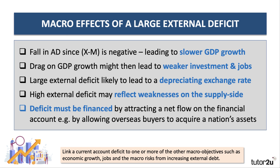The external deficit itself may actually reflect weaknesses on the supply side. The crucial point is that a high external deficit has to be financed by attracting a net flow on the financial account, which essentially involves allowing overseas investors to acquire a nation's assets. For some countries, a big external trade deficit leads to a loss of confidence by foreign investors, and can also lead to a big fall in foreign exchange reserves, perhaps forcing countries to borrow money.